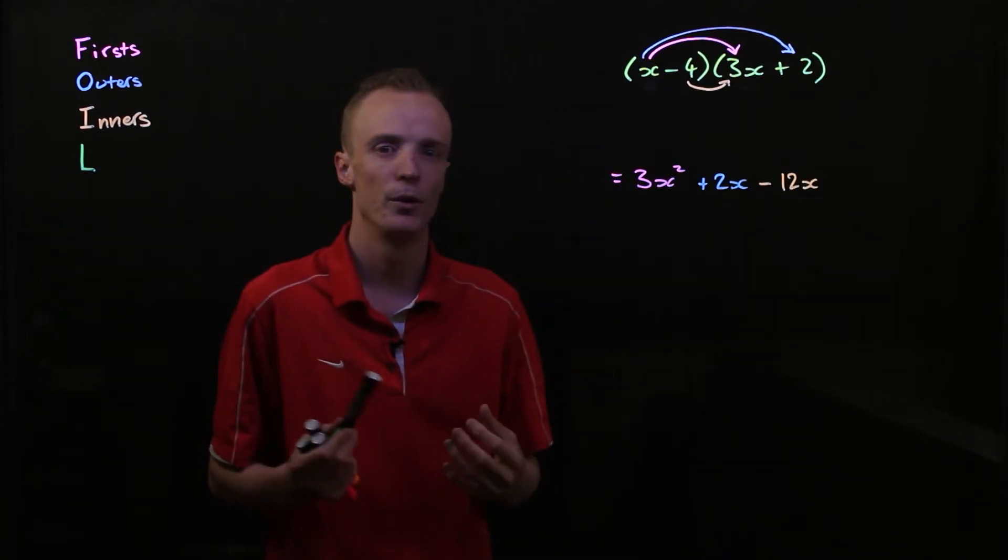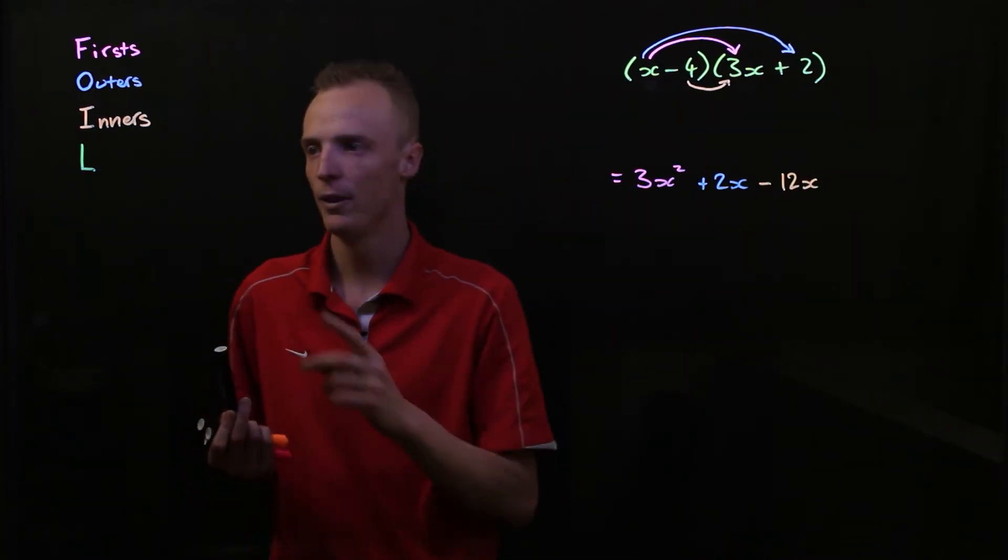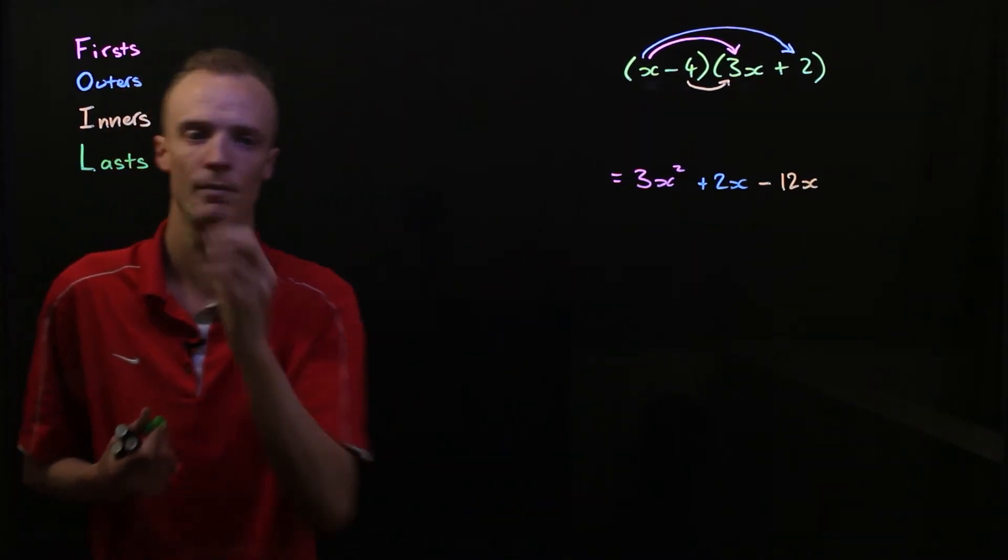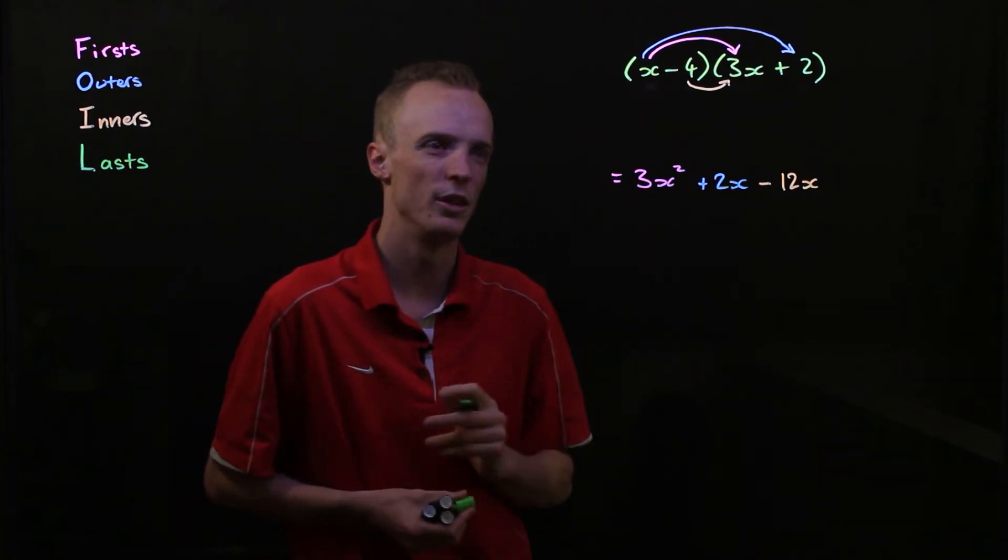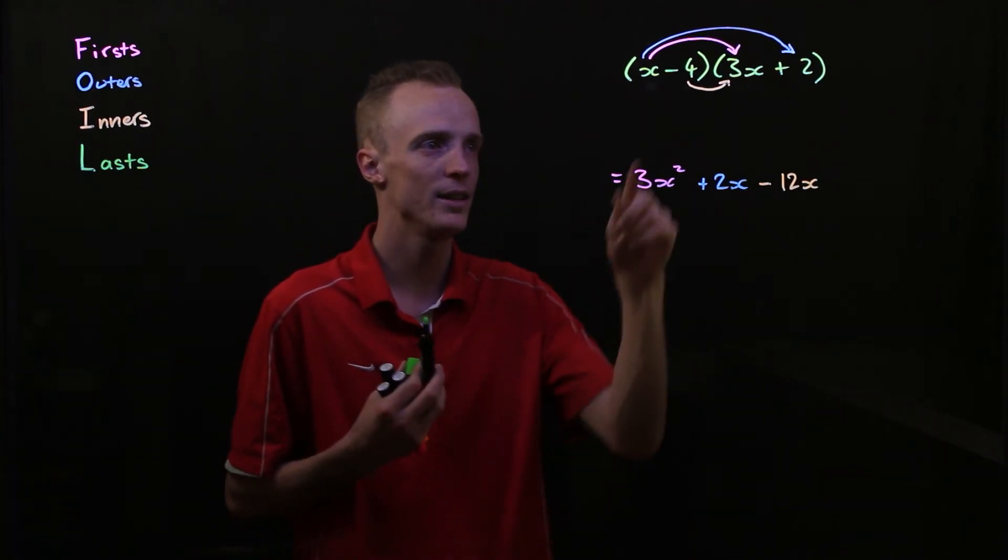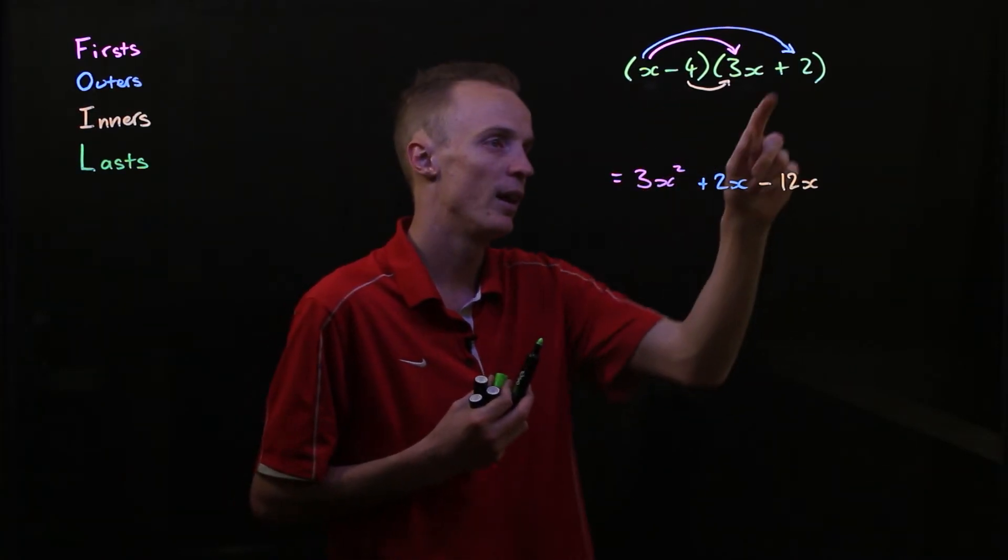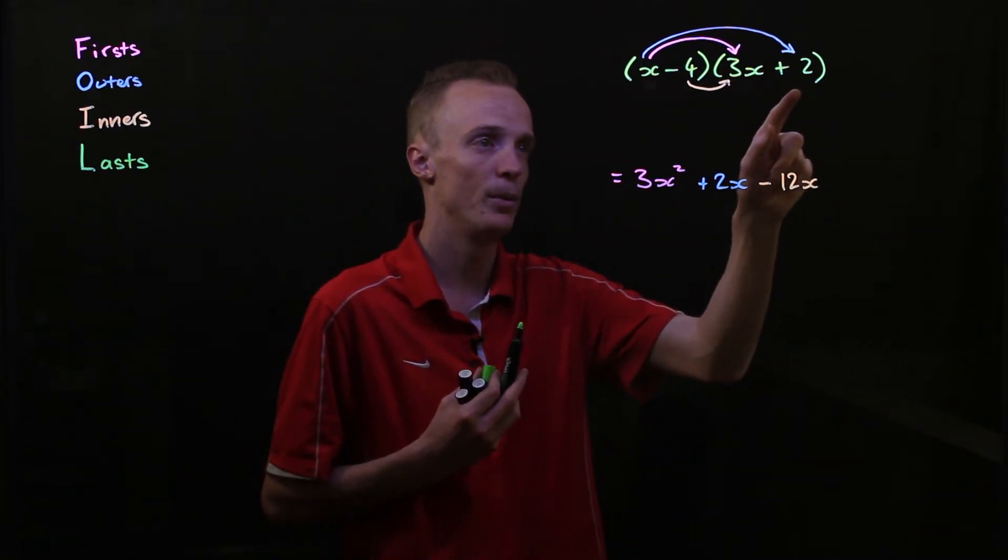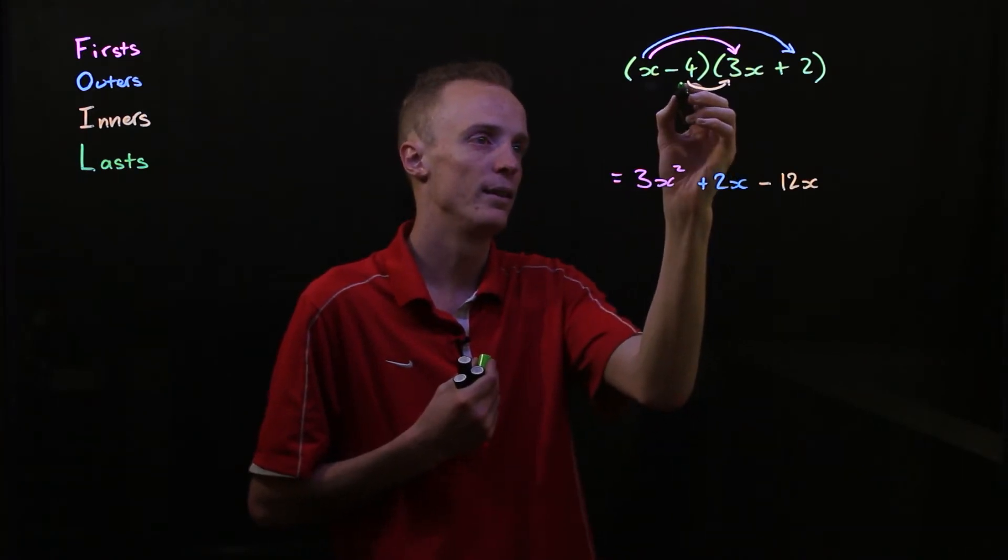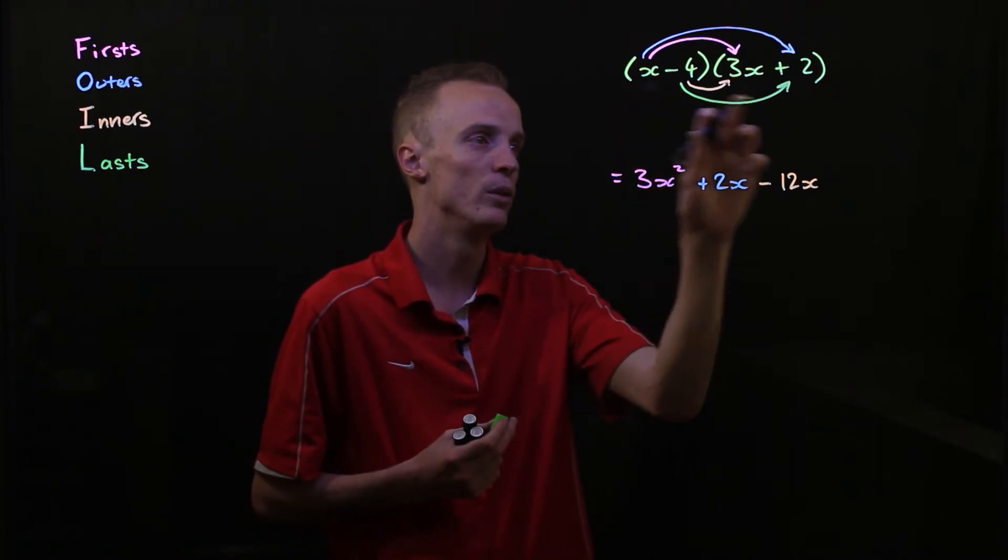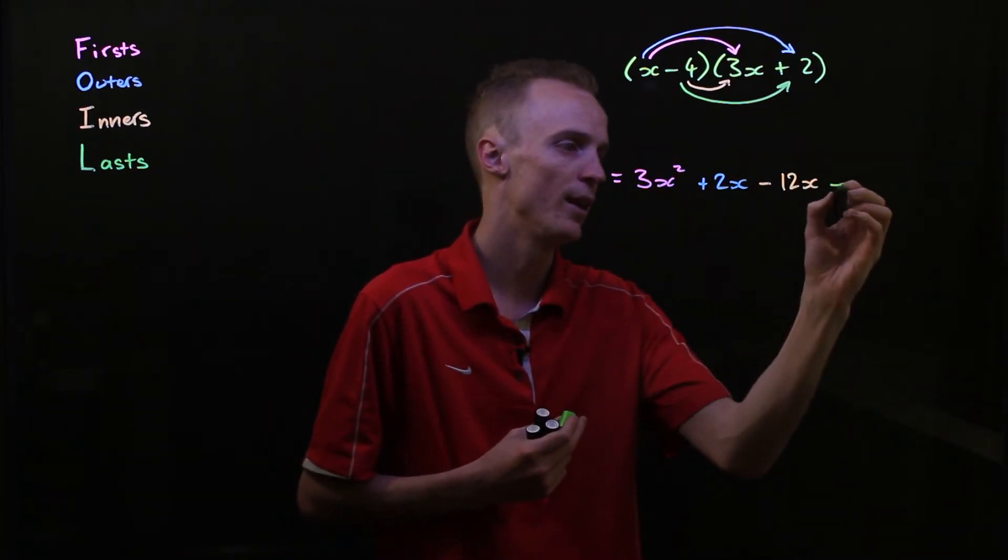And we now move on to our final step. And our final step is this L, and this L stands for lasts. And what that tells us to do is we're going to multiply the last term of the first bracket, so this negative 4, with the last term of this second bracket, this positive 2. So this will be this negative 4 multiplied by this positive 2. Now negative 4 times positive 2 will be negative 8.